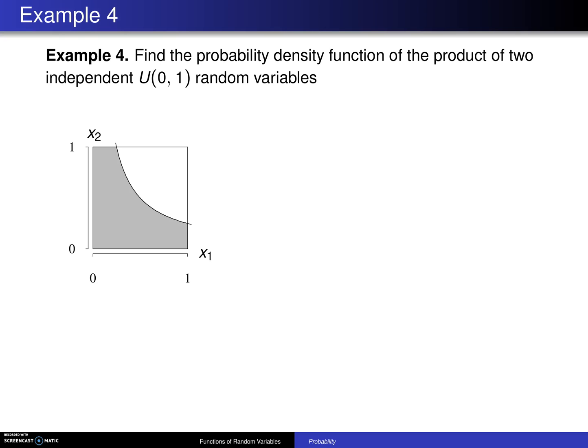In the previous example, we found the distribution of the minimum of two discrete random variables. In this particular example, we find the probability density function of the product of two continuous random variables, and more specifically, two independent uniform(0,1) random variables.